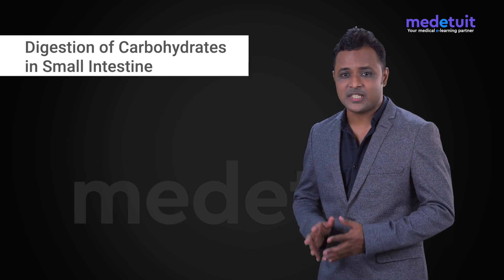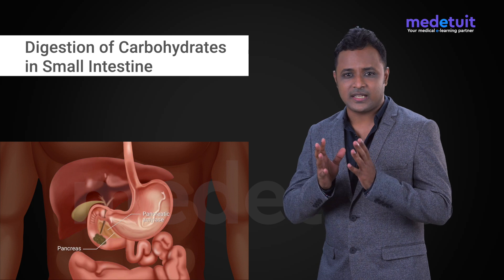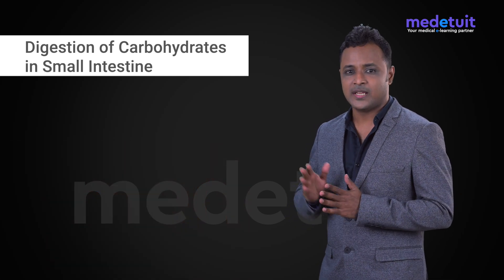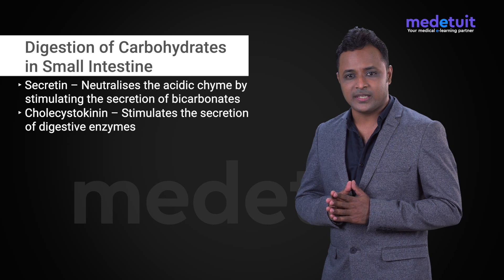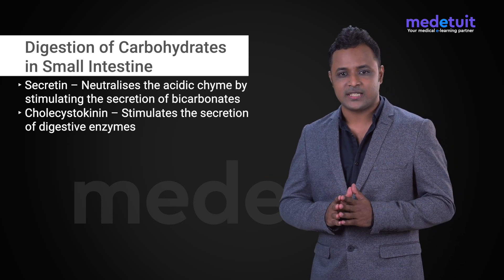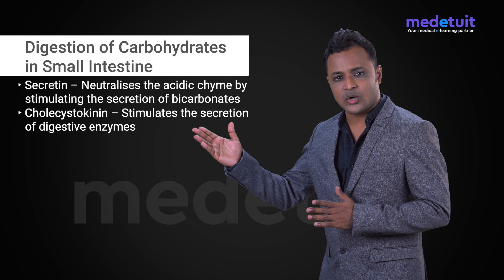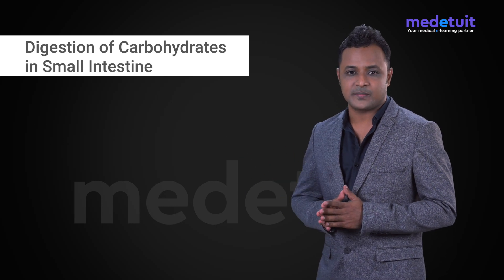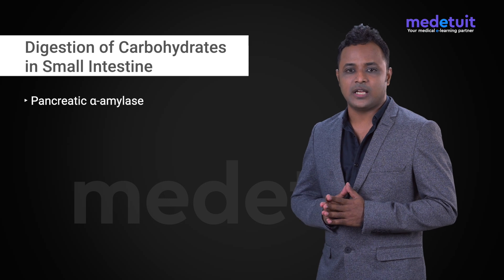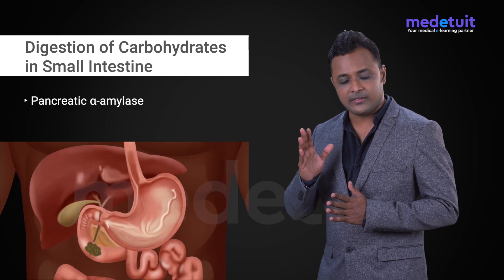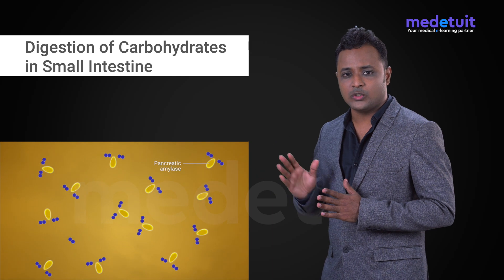Digestion of carbohydrates in the small intestine: as the acidic contents of the stomach enter the small intestine, the acidic chyme stimulates the secretion of secretin and cholecystokinin. Secretin stimulates the pancreas and liver to secrete bicarbonates, which neutralize the acidic chyme. Cholecystokinin stimulates the secretion of exocrine pancreatic and intestinal digestive enzymes. The exocrine pancreas secretes pancreatic alpha-amylase, which is an isoenzyme of salivary alpha-amylase and similarly hydrolyzes alpha 1 to 4 glycosidic bonds.